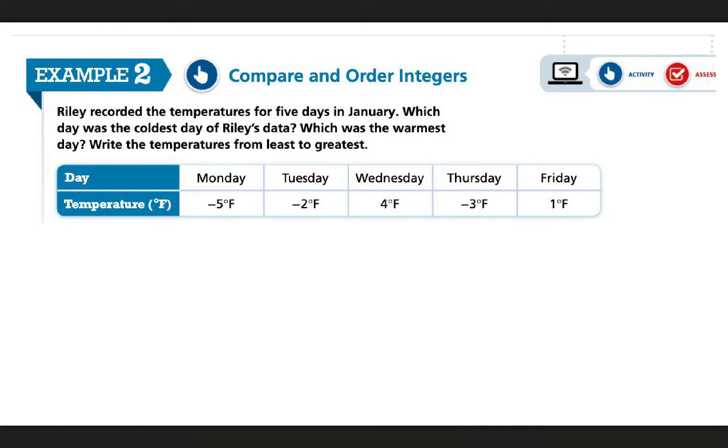All right, example two. So we're going to compare and order integers. In this problem, it says Riley recorded the temperatures for five days in January. And we can see that these are the five days in January. It wants to know which day was the coldest day of Riley's data, which was the warmest day. Write the temperatures from least to greatest. So while it doesn't tell us exactly that we need to be using a number line, a number line is a wonderful thing to show the order of numbers. So that's what I'm going to do here.